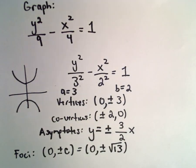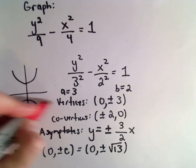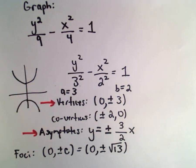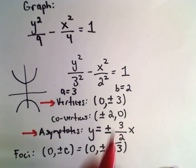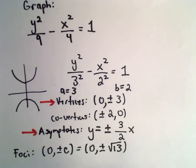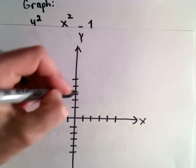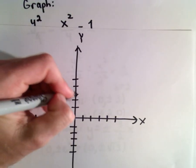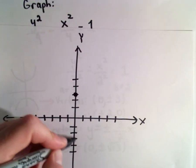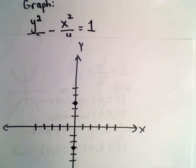To do a decent sketch, the most important things are to get the vertices and the asymptotes. The co-vertices don't even fall on the graph, and neither do the foci. They're obviously important, relevant features, but in terms of graphing it, we don't really need them much. So there's a vertex at (0, 3) and (0, -3).